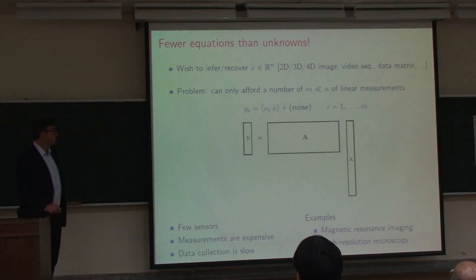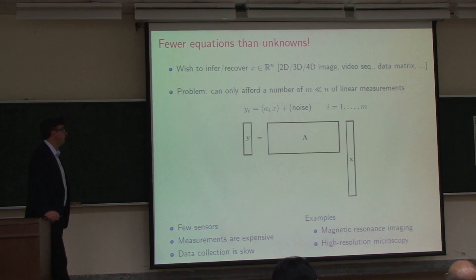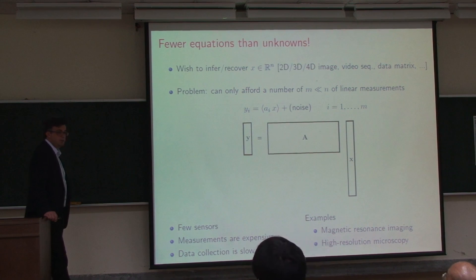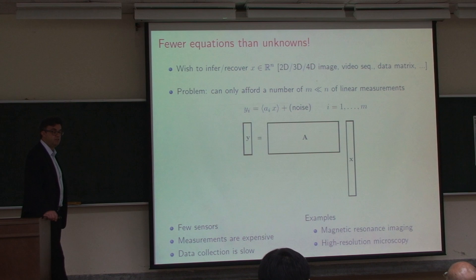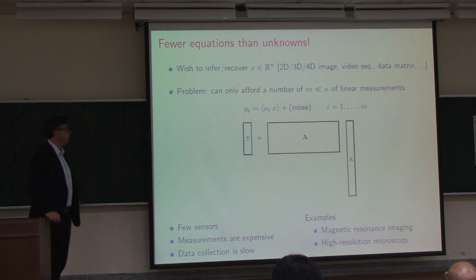Today we're going to focus on two applications that are somewhat different: magnetic resonance imaging and high-resolution microscopy, which are examples of highly underdetermined systems. When you see underdetermined systems you know that you cannot solve them in general — but what we'll see in this lecture is that under certain conditions you can solve highly underdetermined systems.